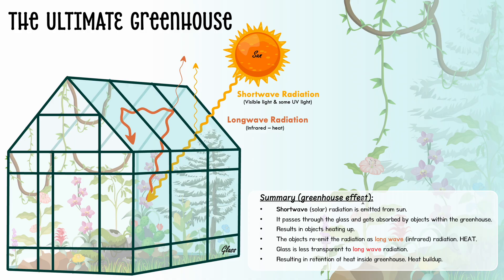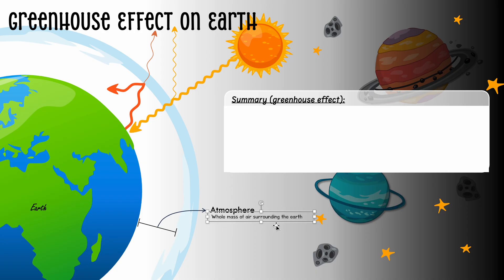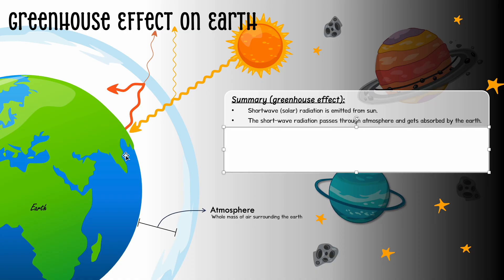Now we're going to apply this to Earth. The first step is the same: the sun emits short wave radiation toward Earth. Before it reaches Earth, it encounters the atmosphere — the layer of air surrounding the Earth. The atmosphere has many sub-layers like the stratosphere, but for the IB you just need to know it is the air layer surrounding Earth. The atmosphere behaves just like the glass of a greenhouse — it is permeable to short wave radiation, so a lot of it passes straight through, though some is reflected. The radiation that passes through is absorbed by organisms, water, and land on Earth, causing them to heat up.